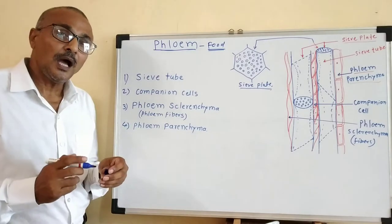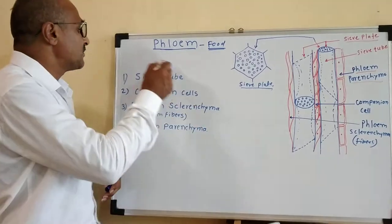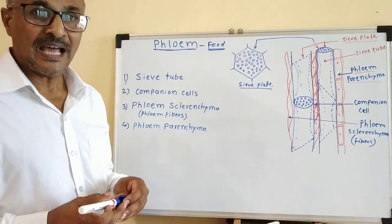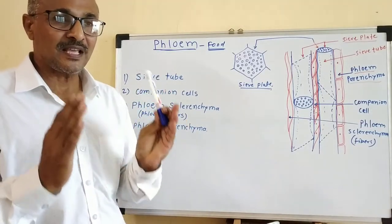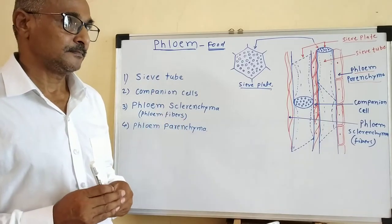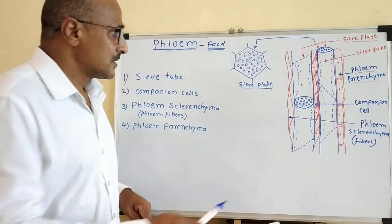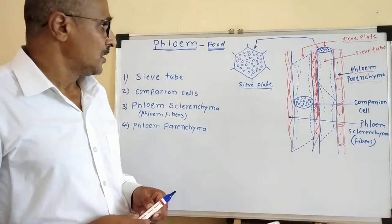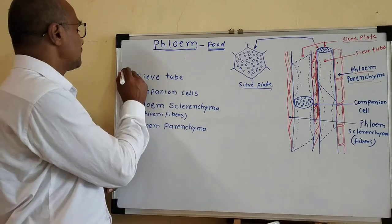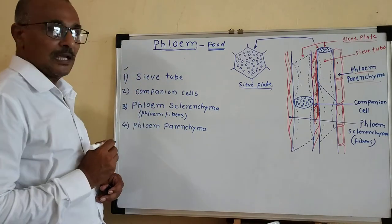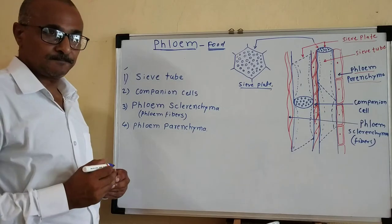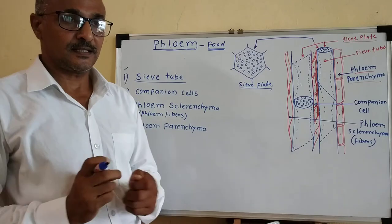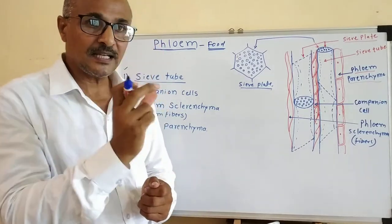Let us see how the different types of the four elements of the phloem are arranged in a phloem tissue or arranged in a plant. Now see the diagram here, see the figure. First we see one by one that is phloem elements. First is the sieve tube. Basically, this sieve tube is a tube-like structure — it is a cylindrical tube-like structure.